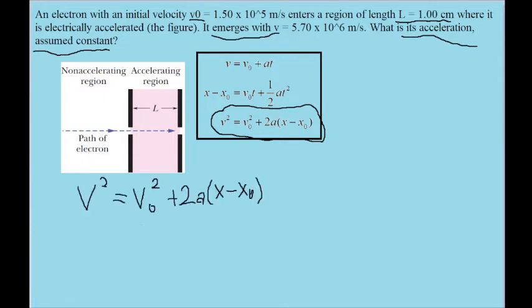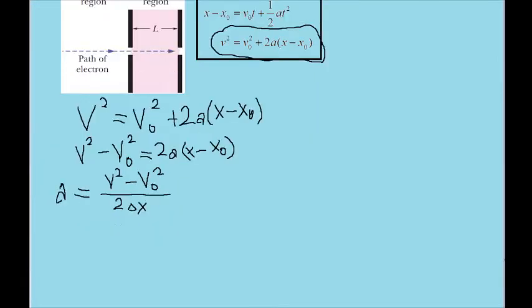We'll want to solve this equation for a, so let's first get the v-naught squared subtracted from both sides to get the term with a on its own, like this. Then we'll divide both sides of the equation by two times the displacement to get a on its own. And you should get an equation that looks like this.